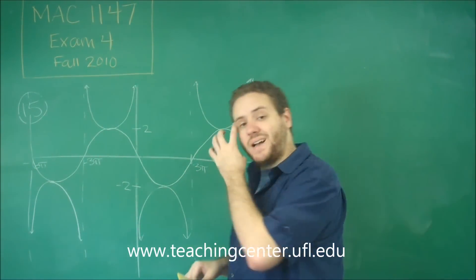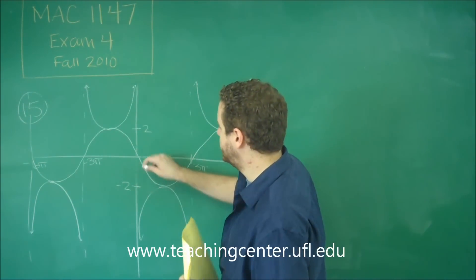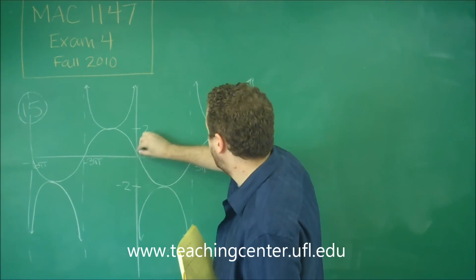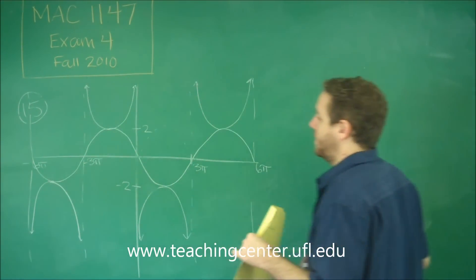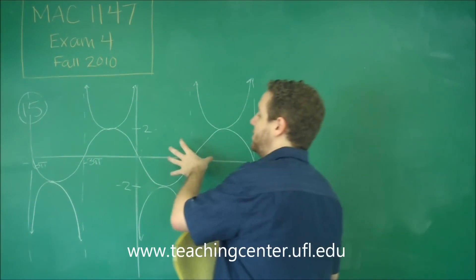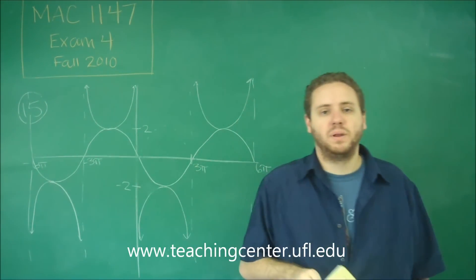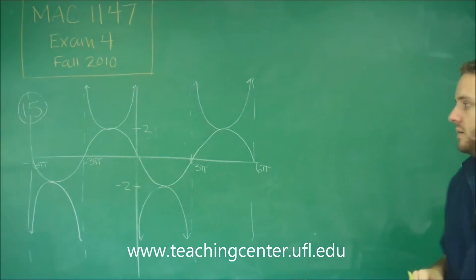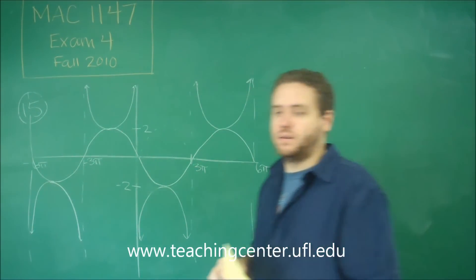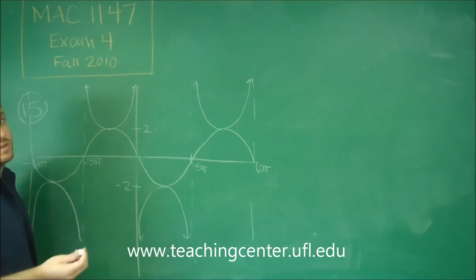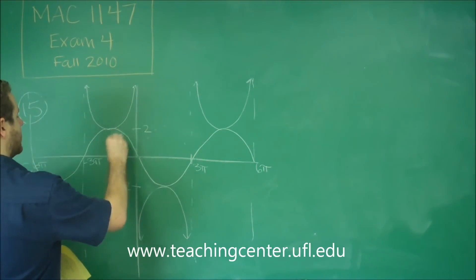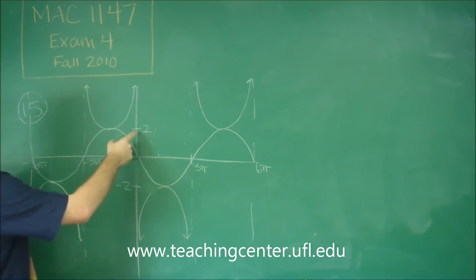Because if this is a sine graph, remember sine normally starts at 0 and goes up. So if this is a sine graph, it's shifted an entire half period away. If this is a cosine graph, or an inverse cosine graph, cosine starts with a max at the origin. So this is only shifted a quarter period away, not very far.